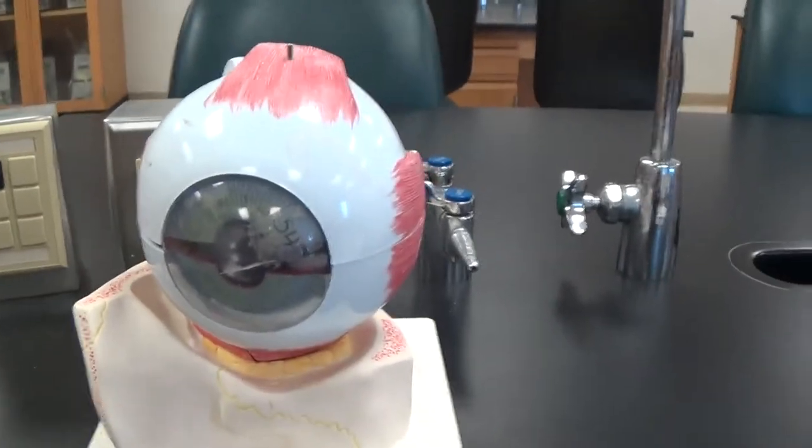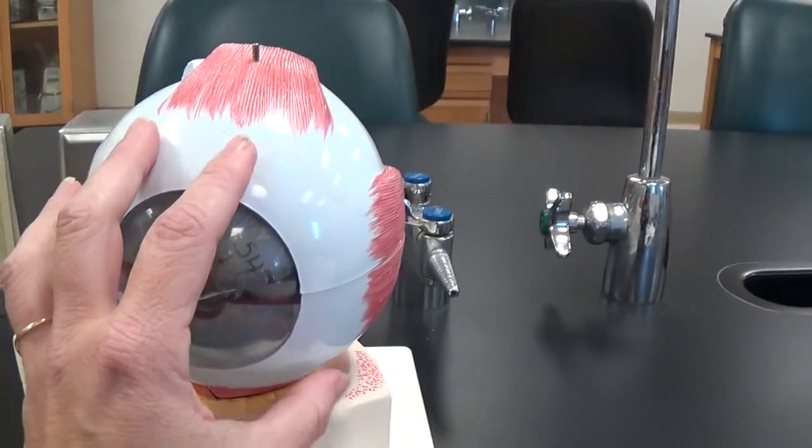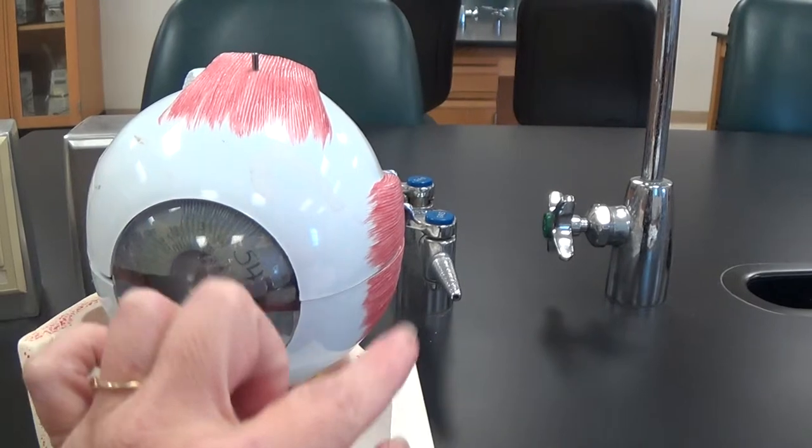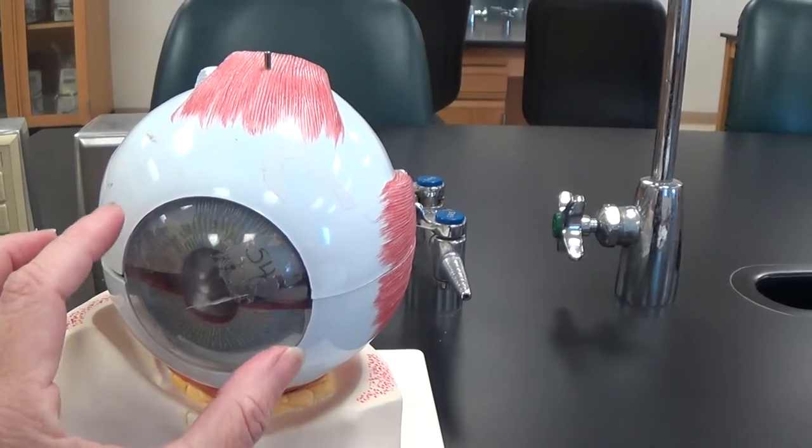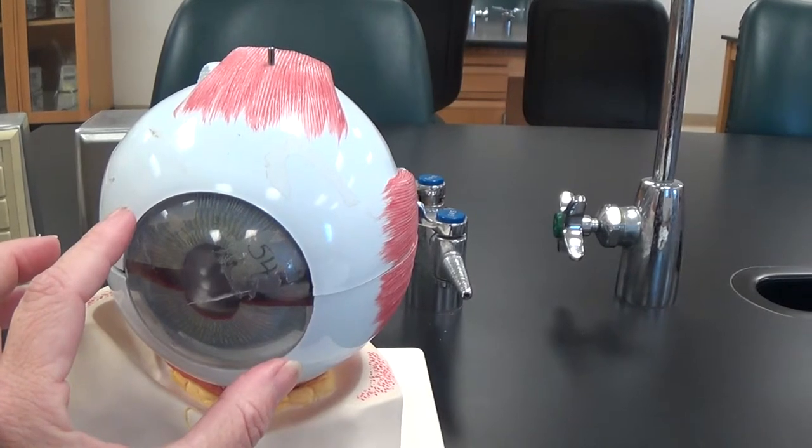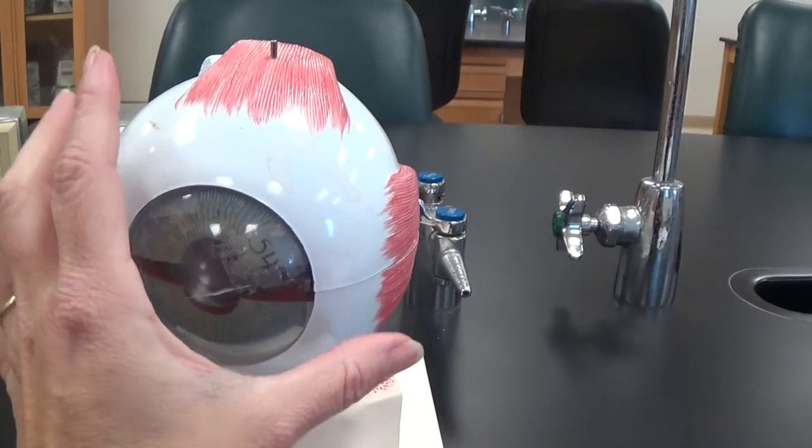Now that takes us to the fibrous coat of the eye. The white around the eye is the sclera, and this clear part in the front, or transparent part, is the cornea. That's the fibrous coat of the eye.